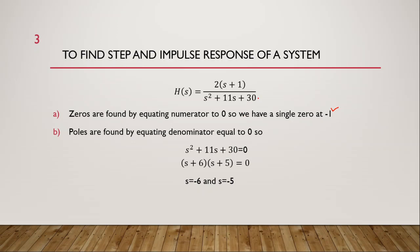To find poles, we equate the denominator to zero and factorize the equation. After factorizing, we get two poles which are at minus six and minus five.